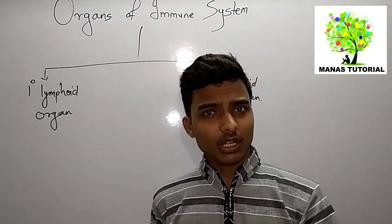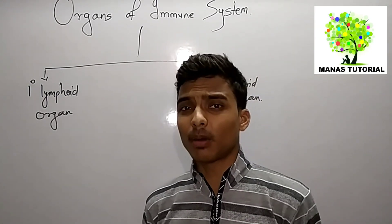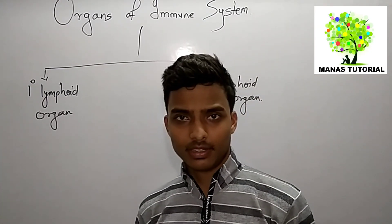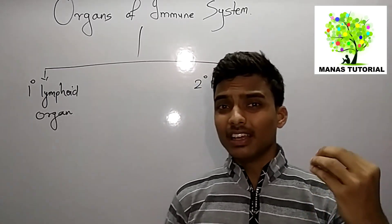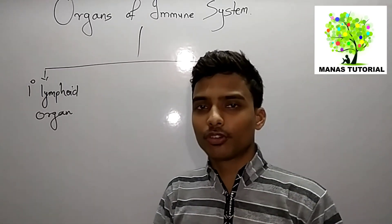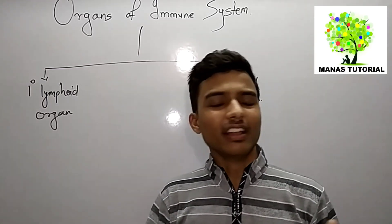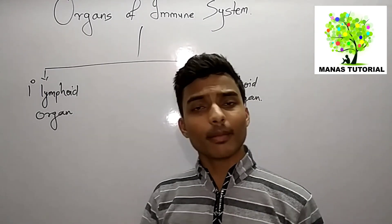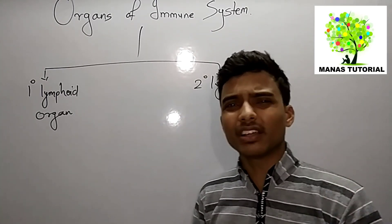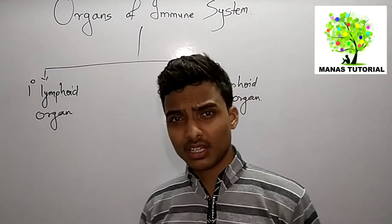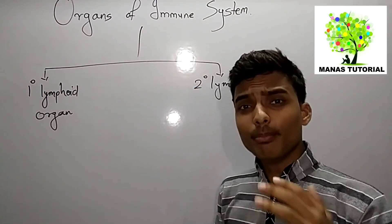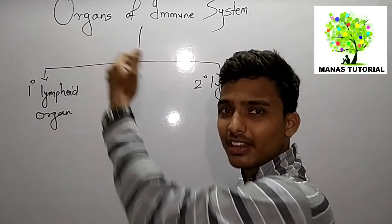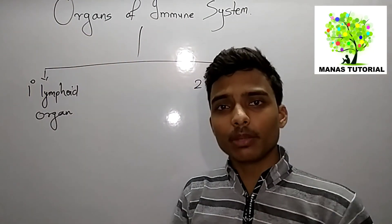In the previous video we discussed about the cells of the immune system, such as natural killer cells, B cells, T cells, macrophages, dendritic cells, and many other cells. Now in this video we will mainly concentrate on the organs which are related to our immune system.